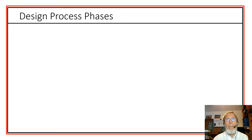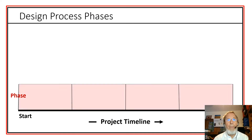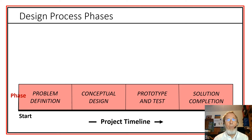Let's look at the design process in terms of its phases of development. We begin a project at a starting point, move through a timeline, and eventually reach our finishing point. In so doing, we typically pass through four phases. The first phase is problem definition, where we attempt to describe what the problem is and what a solution would look like that would satisfy this problem.